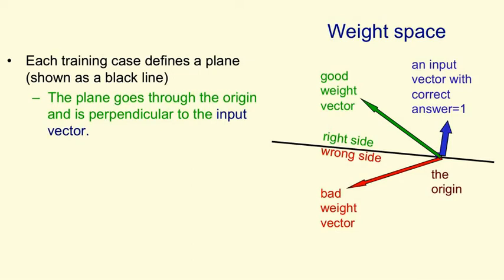And since we've already got rid of the threshold, that means the perceptron will give an output of 1. It'll say yes, and so we'll get the right answer. Conversely, if we have a weight vector like the red one that's on the wrong side of the plane, the angle with the input vector will be more than 90 degrees. So the scalar product of the weight vector and the input vector will be negative. And we'll get a scalar product that's less than 0, so the perceptron will say no or 0, and in this case we'll get the wrong answer.